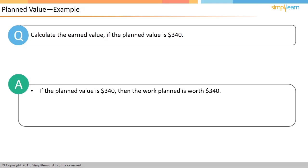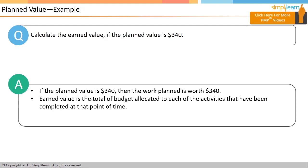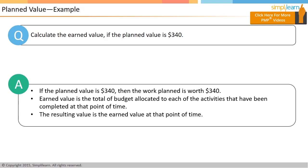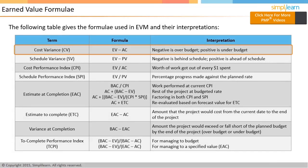To calculate earned value, add the budget allocated to each of the activities that have been completed at that point in time — the resulting value is the earned value. In cost variance, a negative value means the project is over budget, while a positive value means the project is under budget.